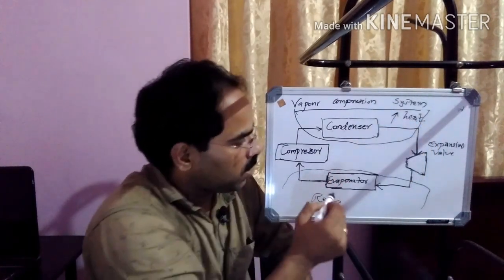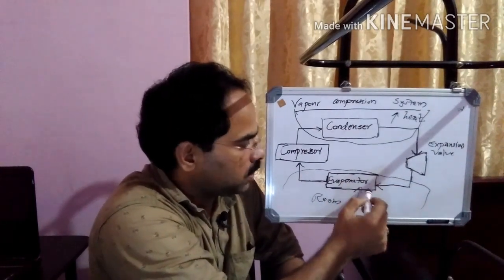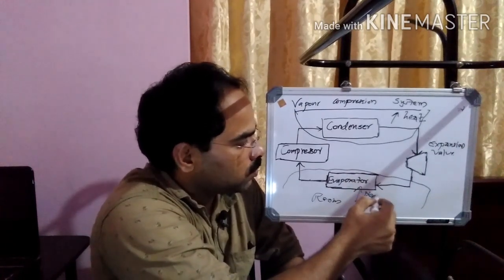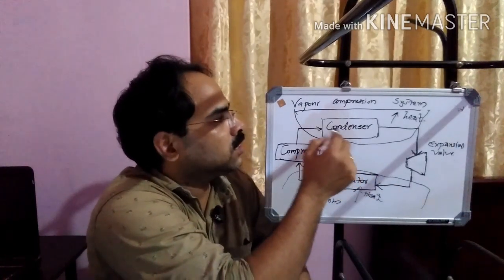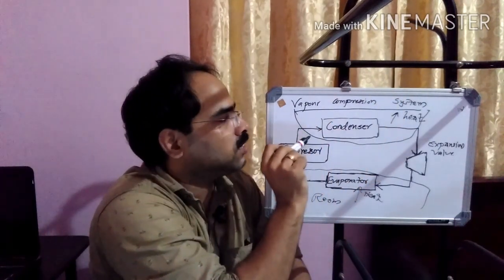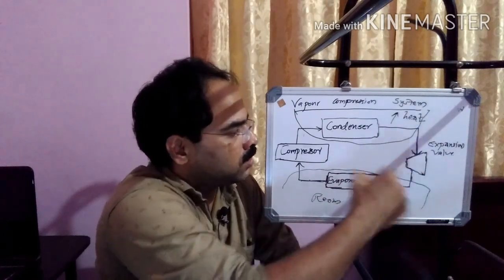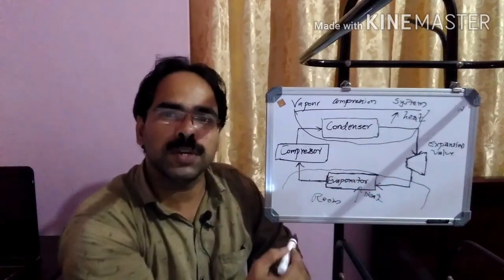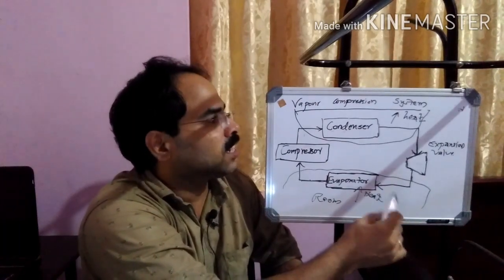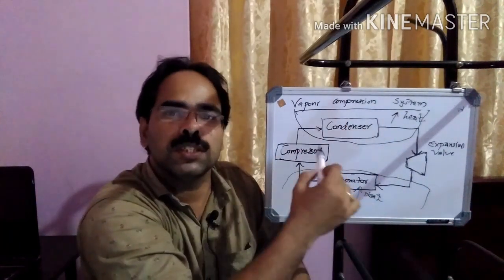When the refrigerant reaches at the evaporator, it absorbs the heat. While it reaches near the condenser, that releases the heat and converts that refrigerant into the liquid form, and again that cycle rotates. So continuously, the heat from the room is extracted and is released at the condenser, that means the outside sections.